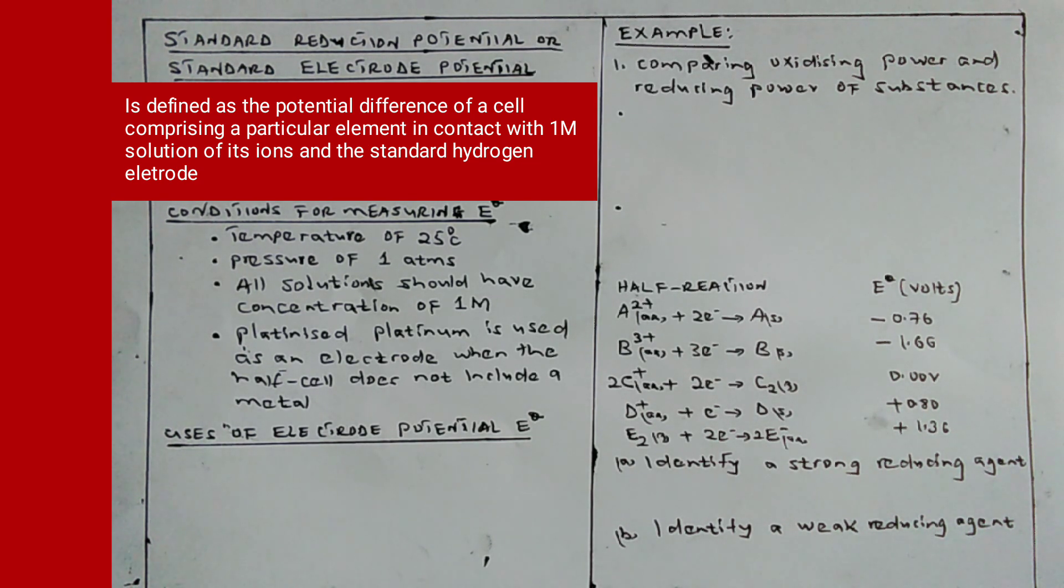For us to measure the E0 values, we have to know the conditions required before measuring it. The hydrogen half-cell is used as a reference electrode with zero potential.